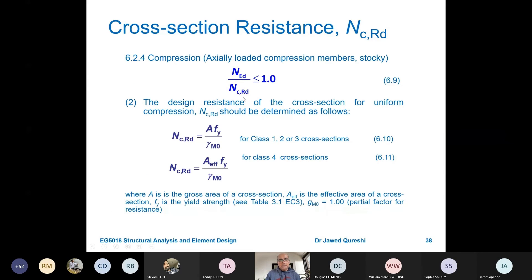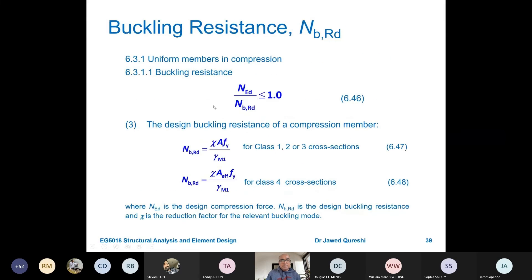Compression resistance is NED over NCRD. Equation numbers you see here are the same as in Eurocode 3, so when you work in a design office, you specify which equation number you're using. That's why my equation numbers for Eurocode 3 are the same as they appear in Eurocode 3 itself. This is further detail of NCRD. For Class 1, 2, and 3 sections, NCRD does not change—this has been taken from the earlier table in section classification. For Class 4 sections, it's A effective Fy over gamma M0. But most of the time, we'll have Class 1 or 2 sections. Now buckling resistance: NED over NBRD. NBRD is chi AFy over gamma M1. For Class 4 sections, again effective, but we won't use Class 4 sections.